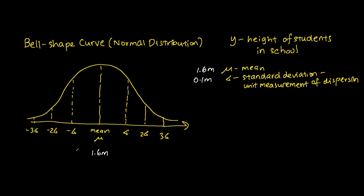Minus sigma represents one standard deviation below the mean, so in this case the value is 1.5 meters. Sigma, or plus sigma, represents one standard deviation above the mean, equivalent to 1.7 meters. Negative two sigma represents two standard deviations below the mean, which is 1.4 meters. Plus two sigma, two standard deviations above the mean, is 1.8 meters. Minus three sigma is 1.3 meters, while plus three sigma, three standard deviations above the mean, is 1.9 meters.